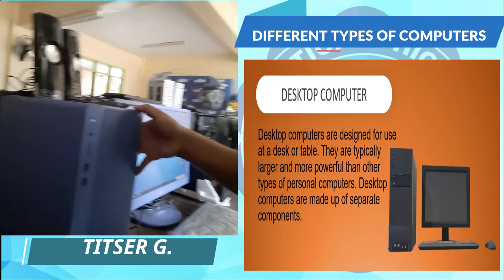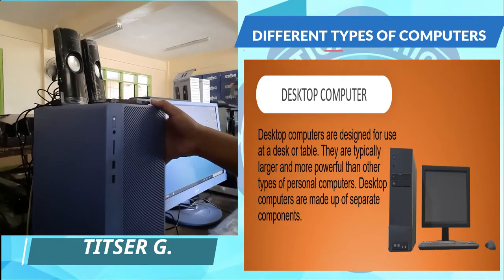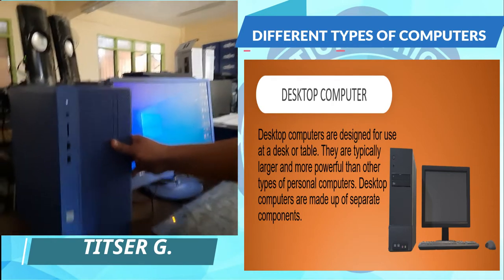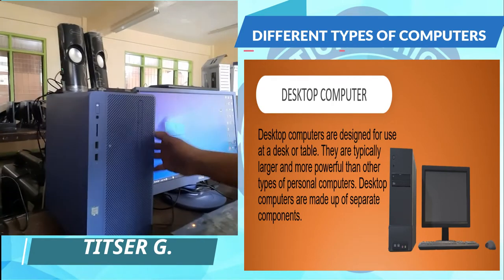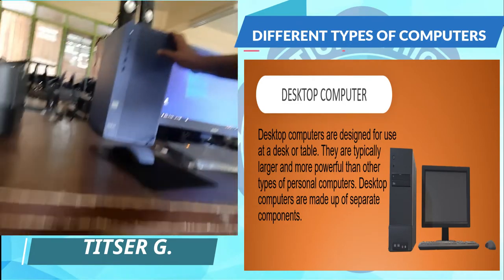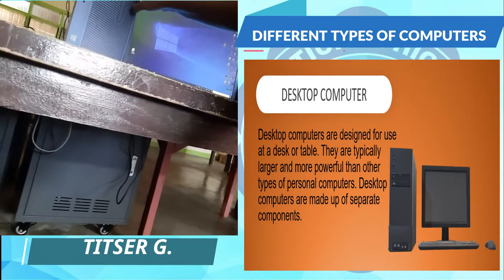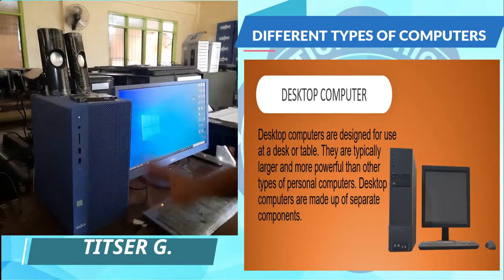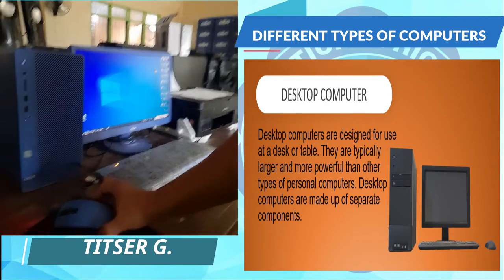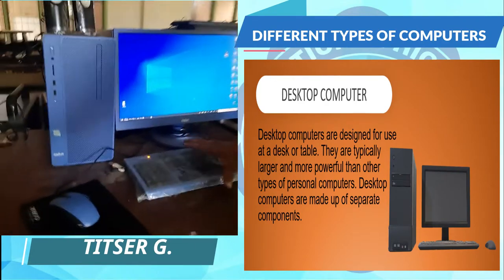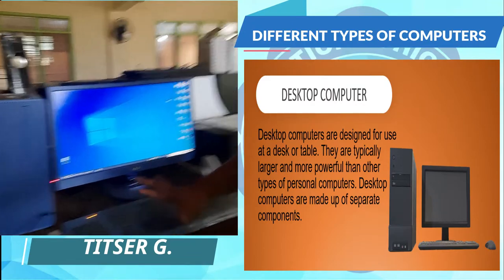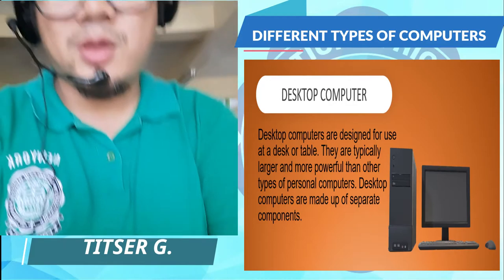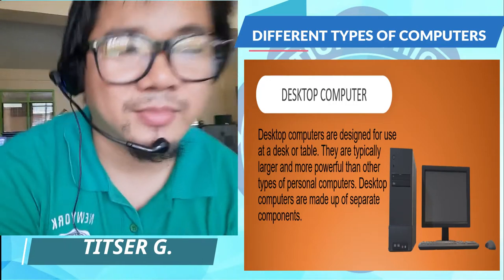I want you to familiarize the components of a desktop computer. There is a rectangular box that can be placed on top of the desk or sometimes under the table. Of course, a desktop computer also has a mouse and a keyboard. Those are the basic components of a desktop computer.